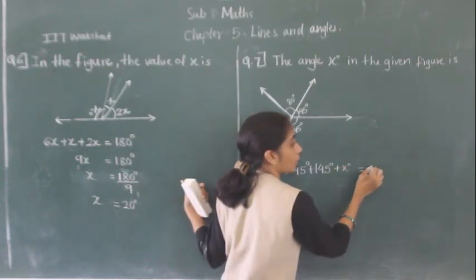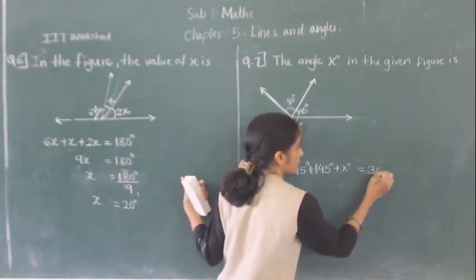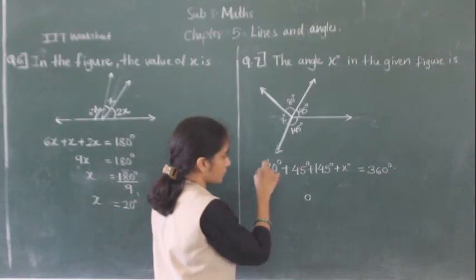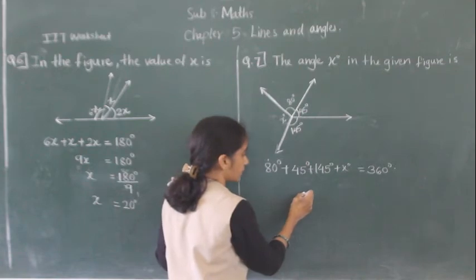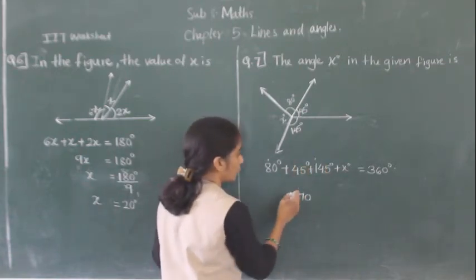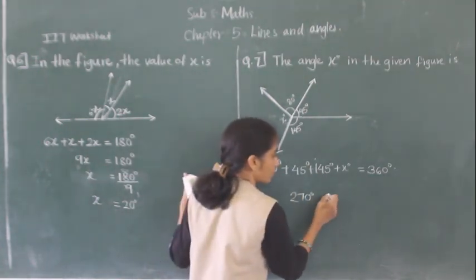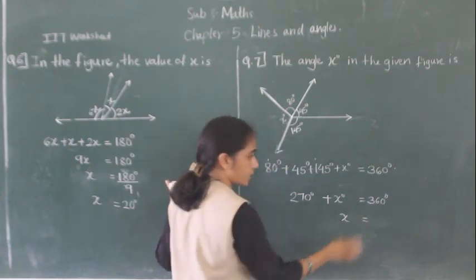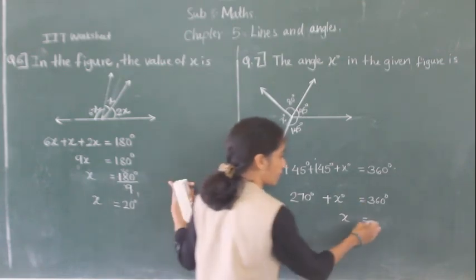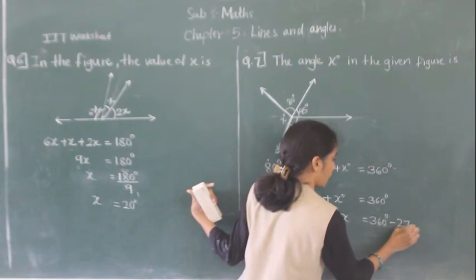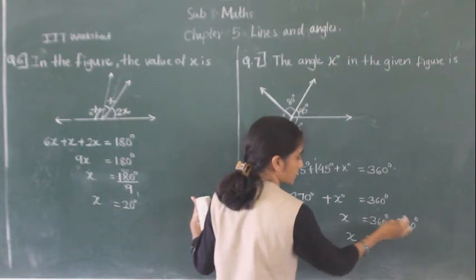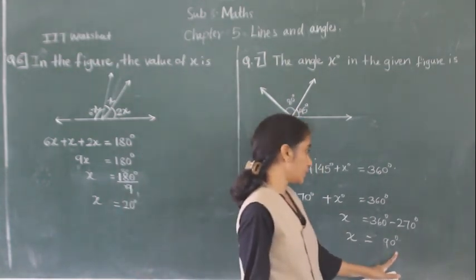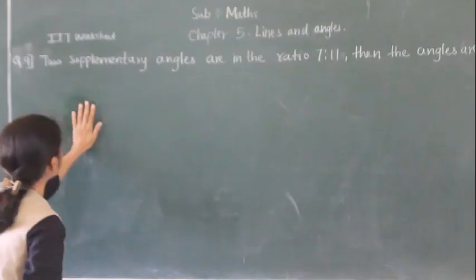The measurement of a complete angle is 360 degrees. Adding: 5 plus 5 is 10, carry 1; 8 plus 1 is 9, 9 plus 4 is 13, 13 plus 4 is 17, carry 1; 1 plus 1 is 2. So the sum of these three angles is 270. Therefore 270 plus x degrees equals 360 degrees. So x equals 360 minus 270 degrees. The measurement of angle x is 90 degrees.